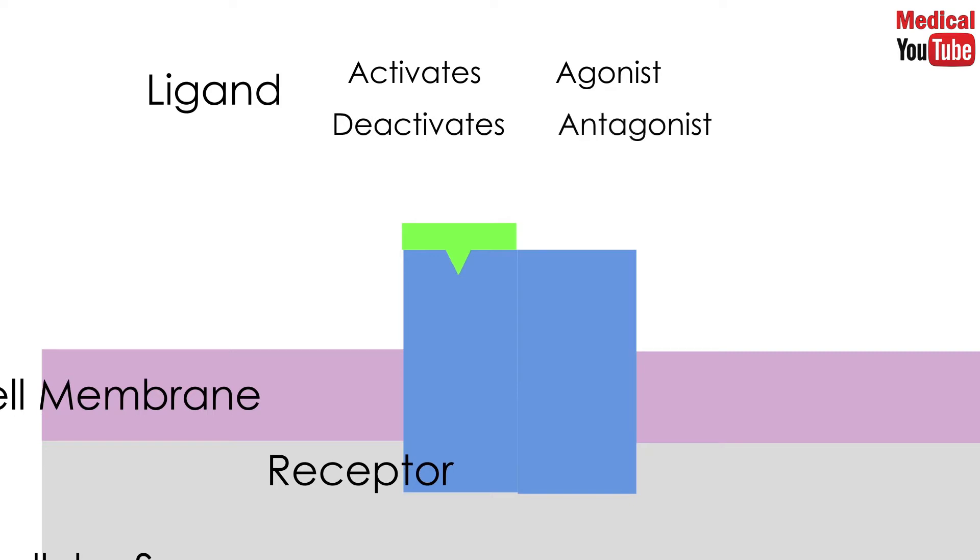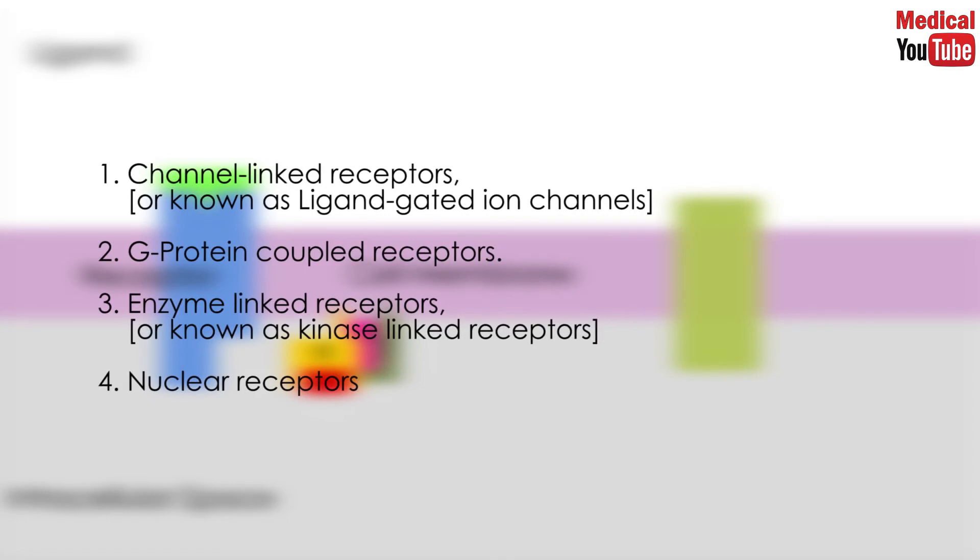We have four types of receptors: channel-linked receptors, also known as ligand-gated ion channels; G-protein coupled receptors; enzyme-linked receptors, also known as kinase-linked receptors; and nuclear receptors. Let's discuss one by one.